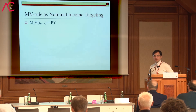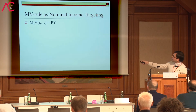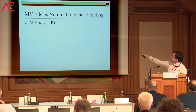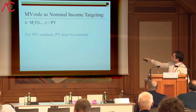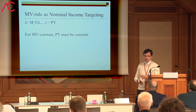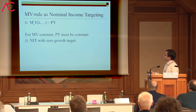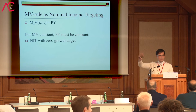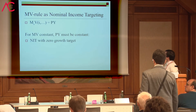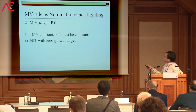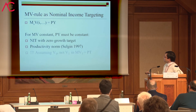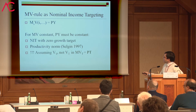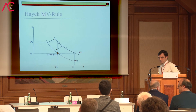MV is not directly observable in the real world, but if the identity holds, MS times V equals PY, where Y is real income and P is the price level, so PY is nominal income. We can say that Hayek was a predecessor of what is today known as nominal income targeting. For constant MV, nominal income should be constant — this is how we translate Hayek's recommendation in modern terms. It is basically nominal income targeting with a zero growth target. Many New Keynesian economists favor nominal income targeting, such as Tobin, Mankiw, and even Woodford today. We can translate Hayek as a proponent of nominal income targeting with a zero growth target — similar to Selgin's productivity norm.